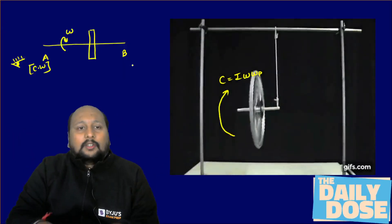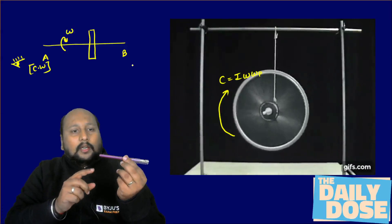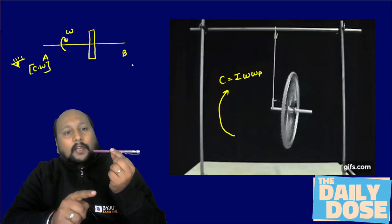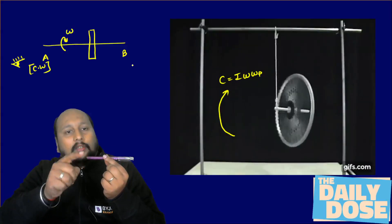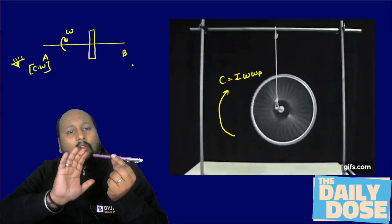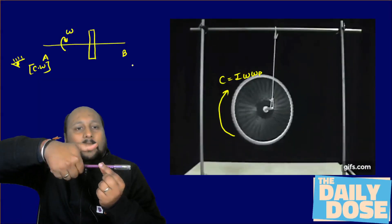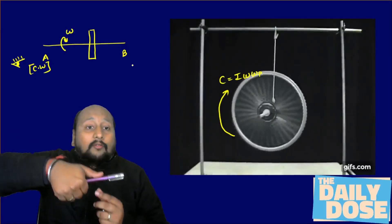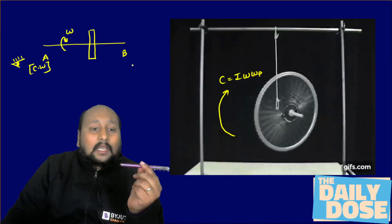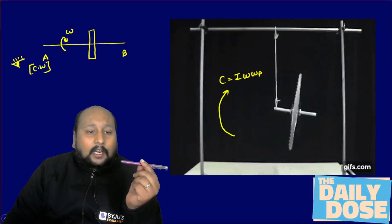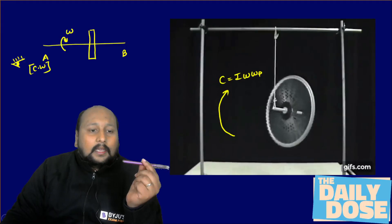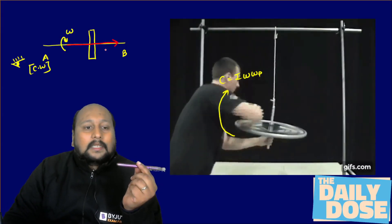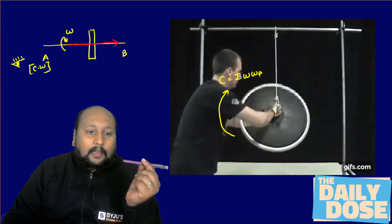Let us suppose there is a rotor — this is side A and it is rotating in a clockwise direction. So you will be turning your fingers in that particular direction, and this thumb will be telling us about the direction of omega. In this case, the direction of omega is basically from A to B.